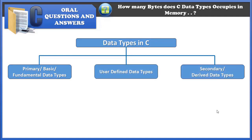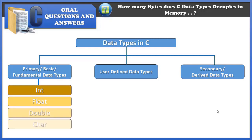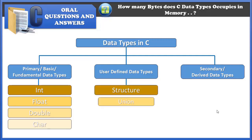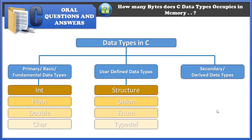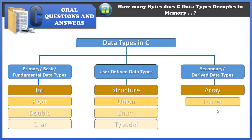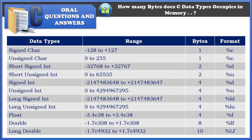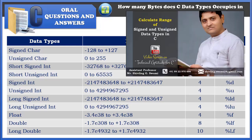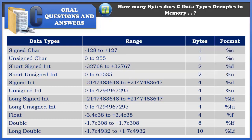In fundamental data types we have integer, float, double, and character. In user-defined data types we have structure, union, enum, and typedef. In derived data types we have arrays and pointers. The table shown here displays various data types with their range of values, number of bytes each occupies, and the format specifiers used in input and output functions. A linked video in the description explains how to calculate these ranges manually.